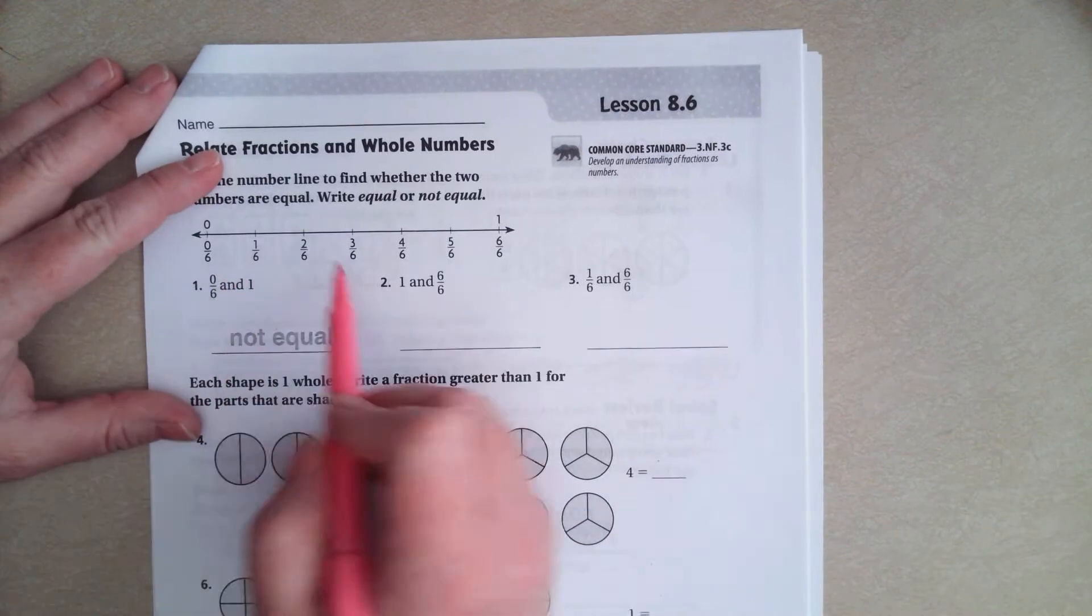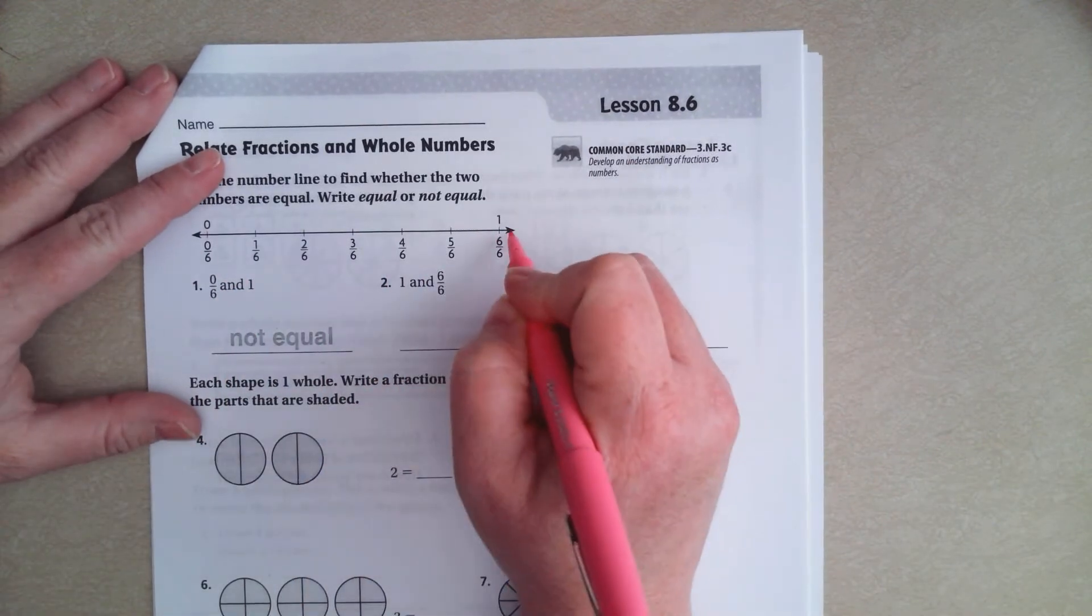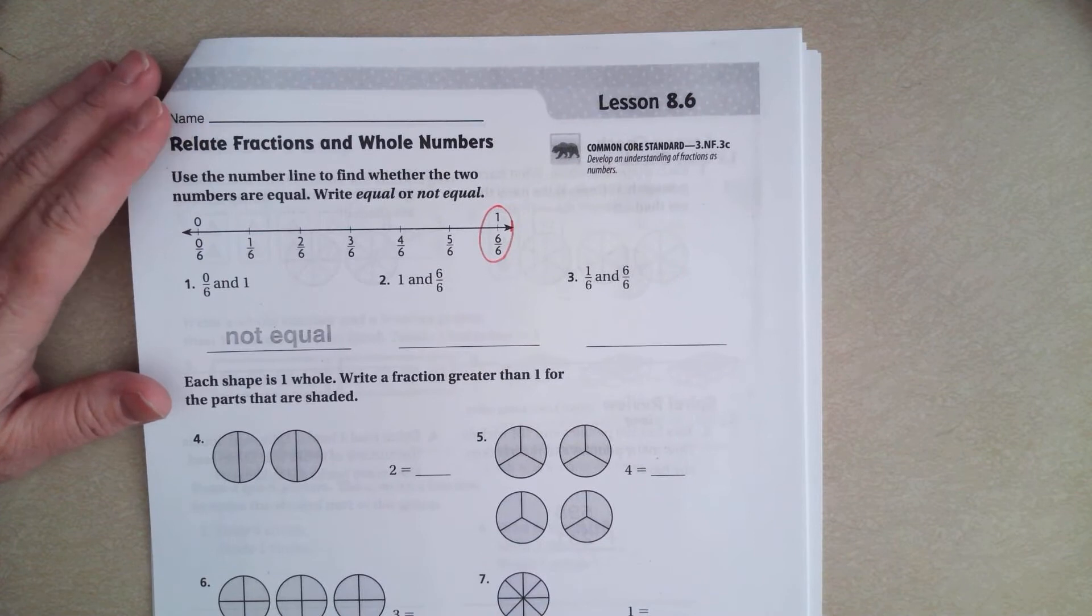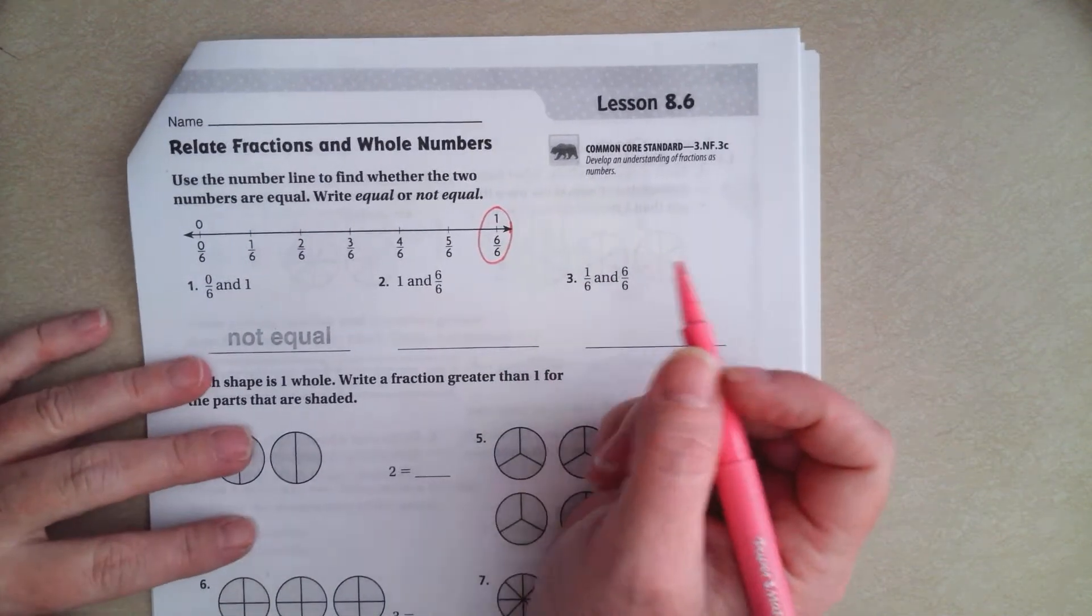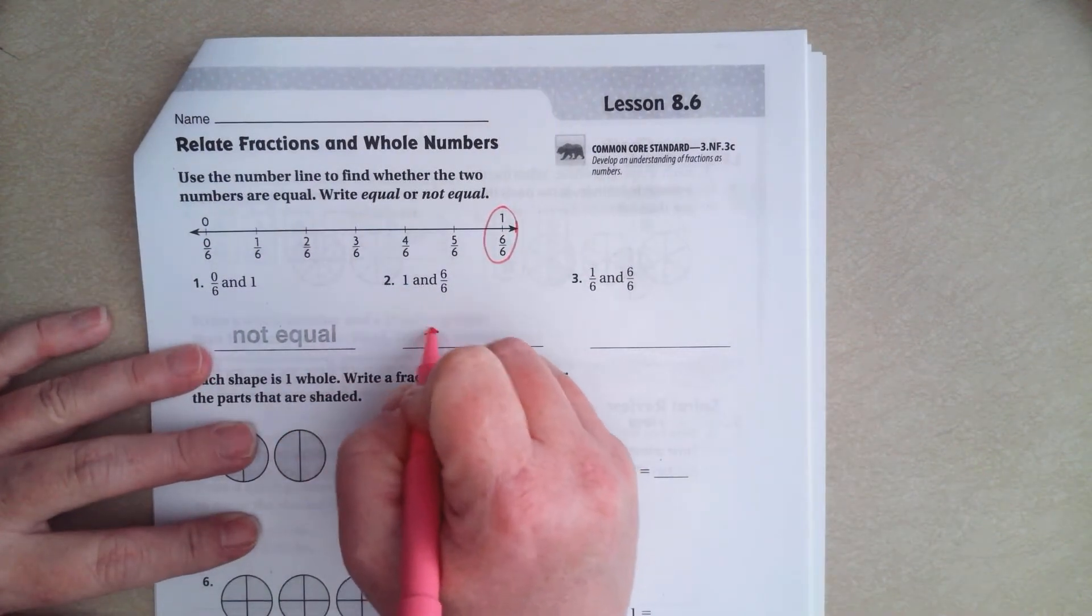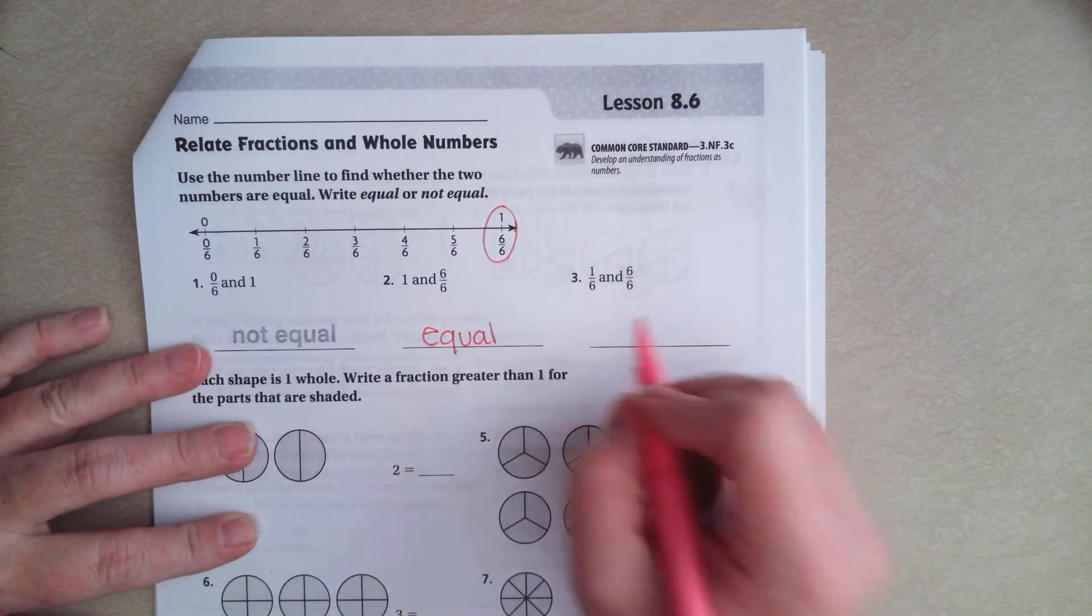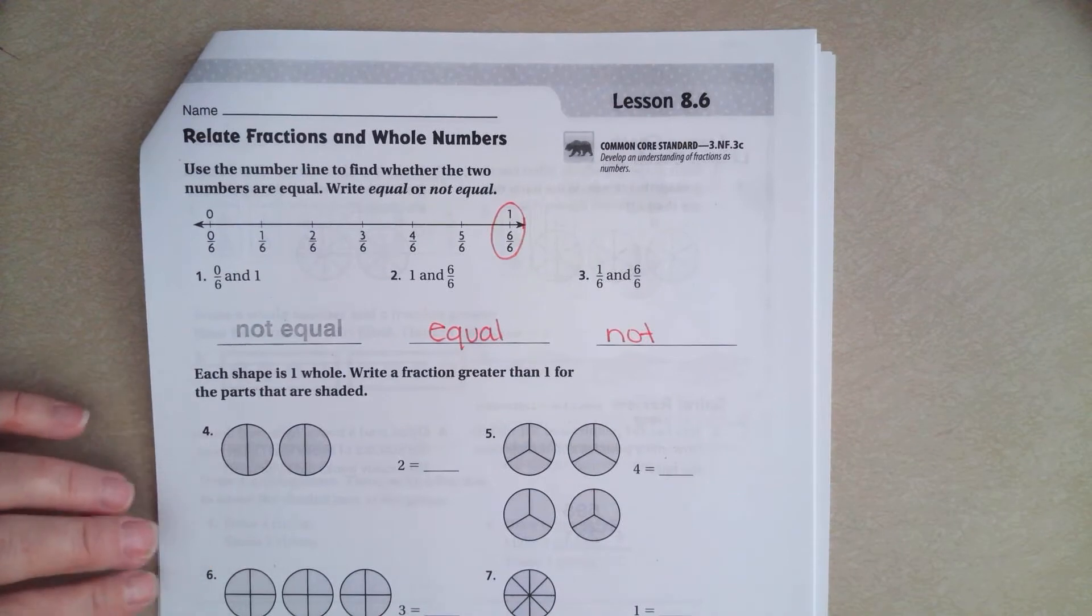So, the only number on this number line that's going to be equal to 1 is 6 over 6. That's the only number that's equal to 1 because it's the same number over itself. So this one is equal. This one, two different numbers, not equal.